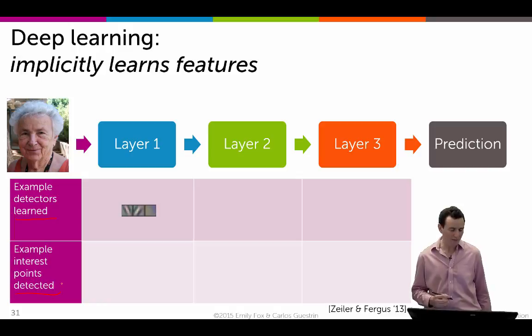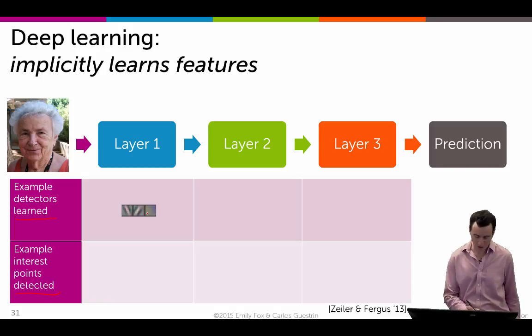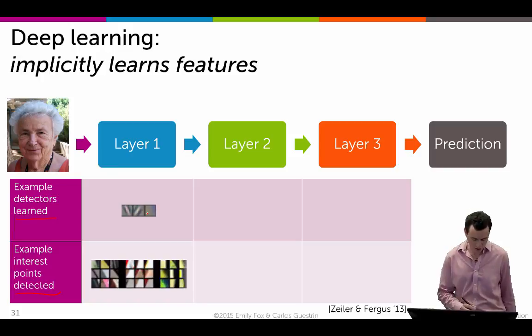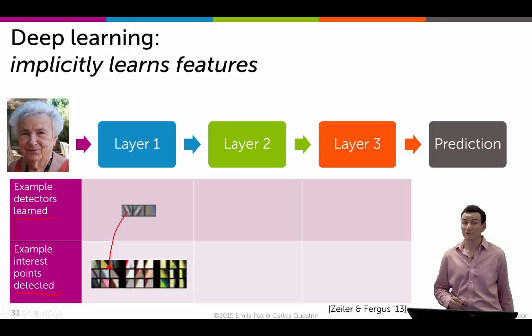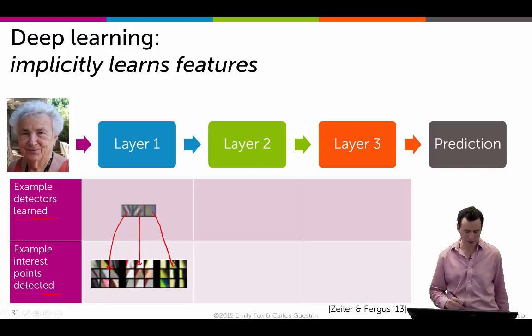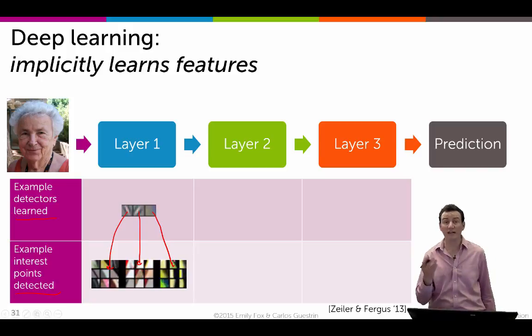At the first layer, you might learn detectors that look kind of like these little patches, which really react to things like diagonal edges. This first detector here is all about capturing diagonal edges. The center one is about capturing diagonal edges in the other direction. And the last one here is about capturing transitions in color from dark to green.